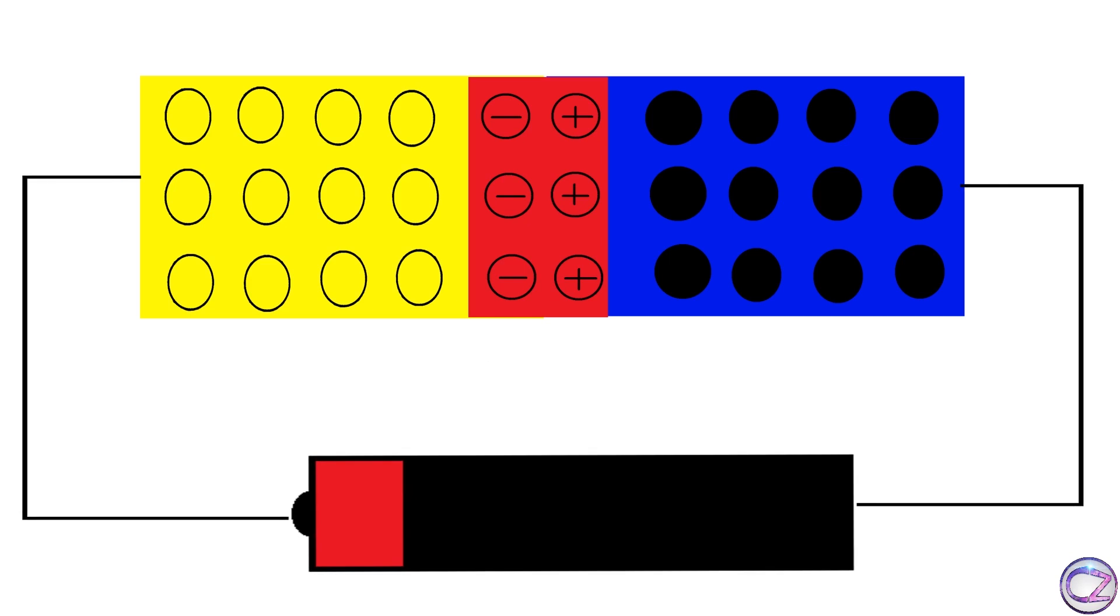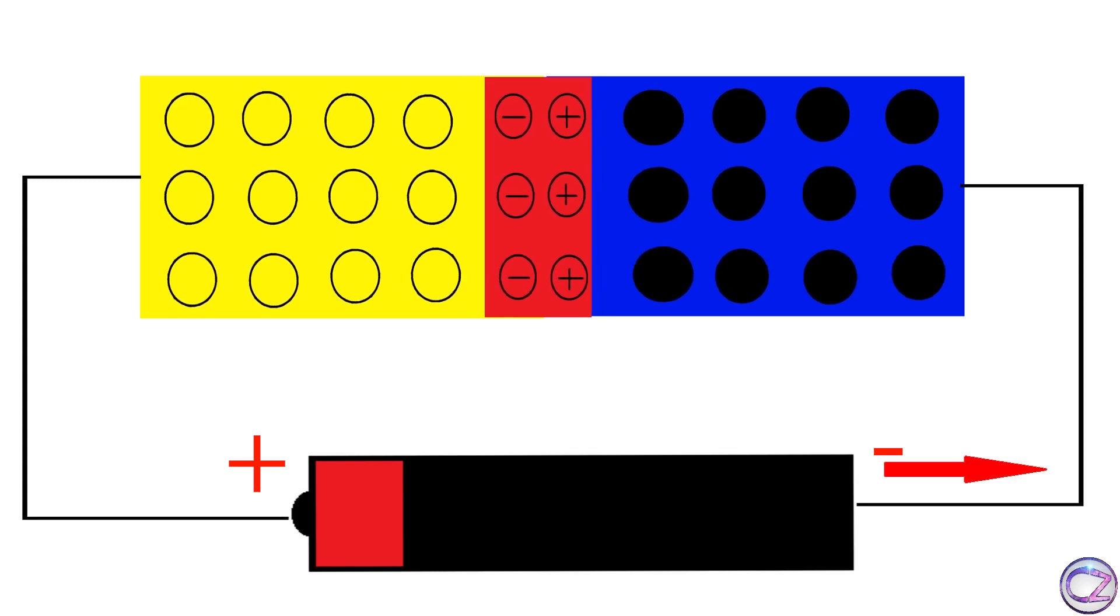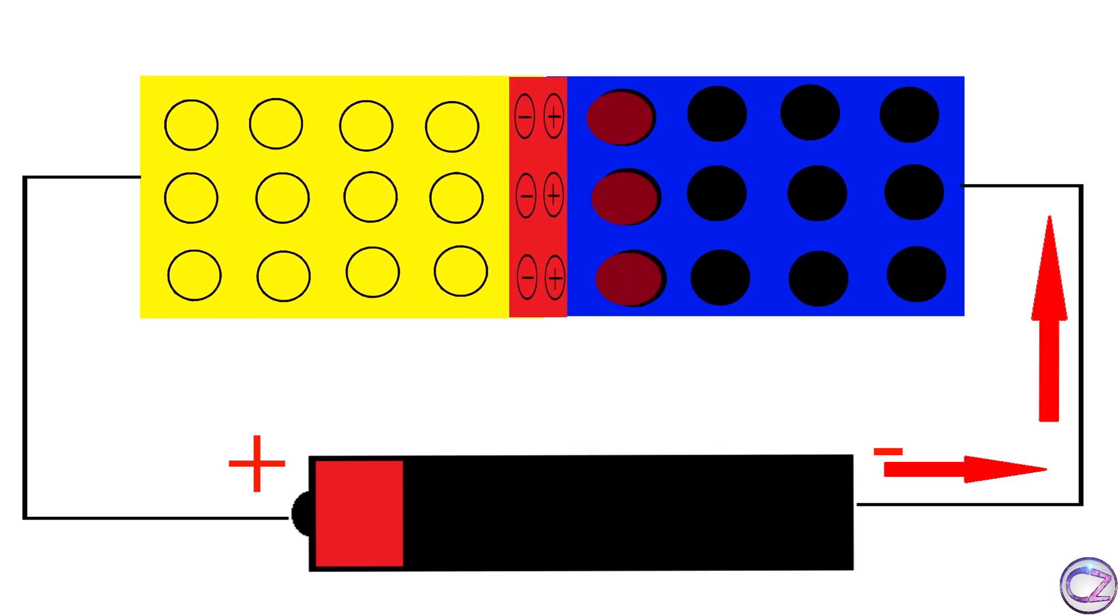However, if you connect the negative terminal of the battery with the N-side and the positive terminal with the P-side of the diode, then electrons cross the potential barrier to fill holes and jump to nearby holes again and again. It's a continuous process.